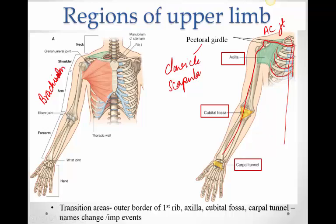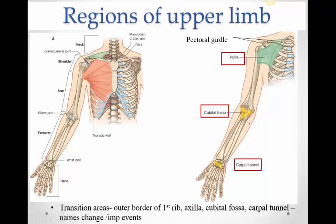If the clavicle is fractured, the entire upper limb is going to sink, which is why the shoulder droops. There are certain areas in the upper limb known as transition zones, where either important structures are present or the name of structures changes in those areas.